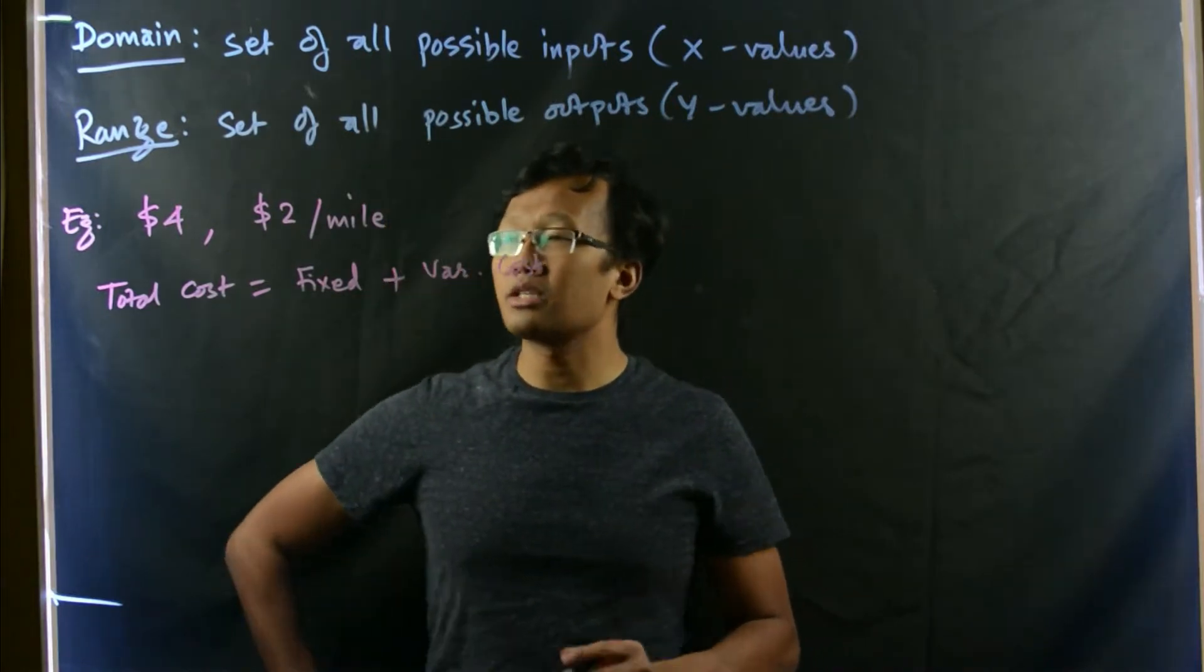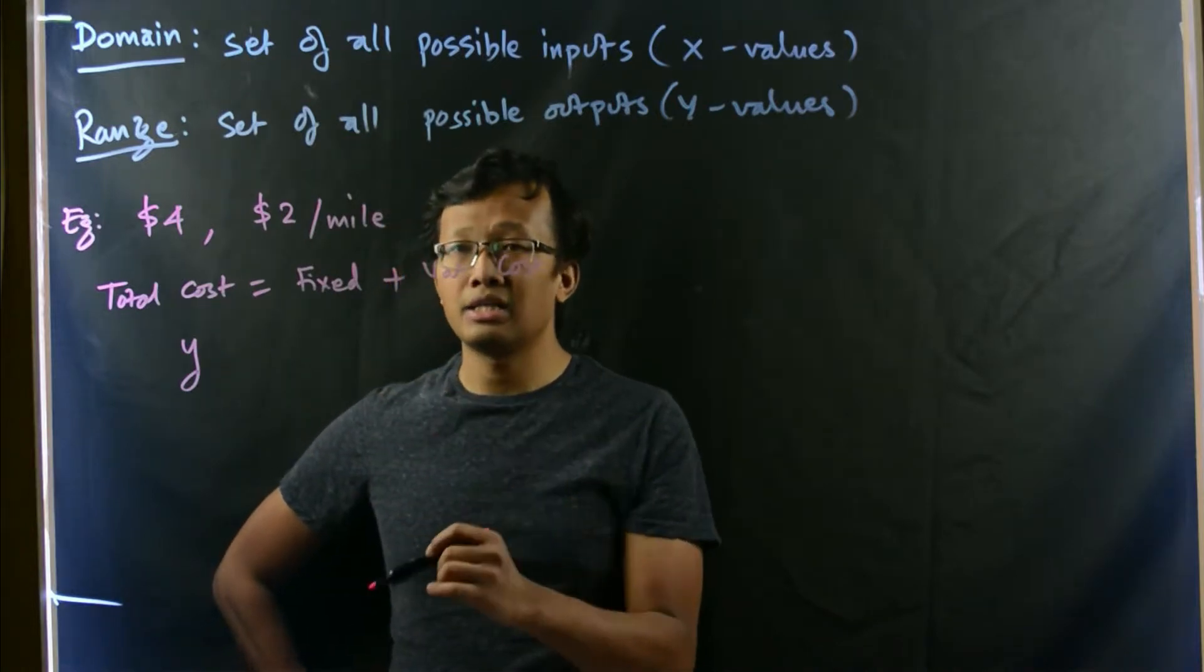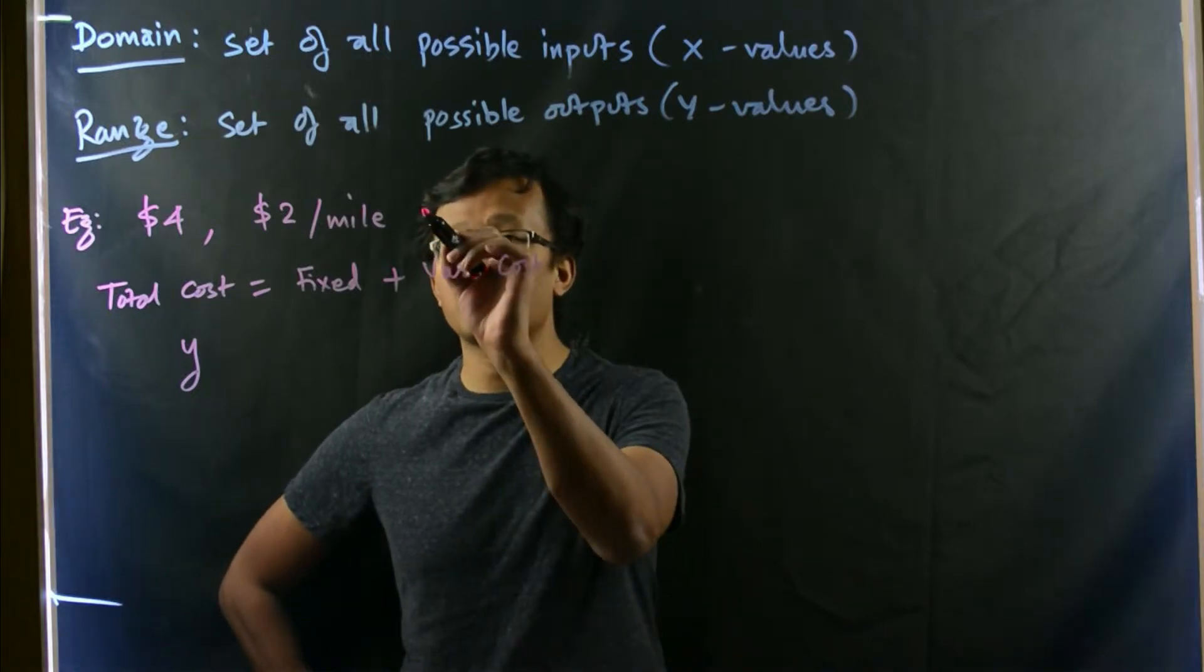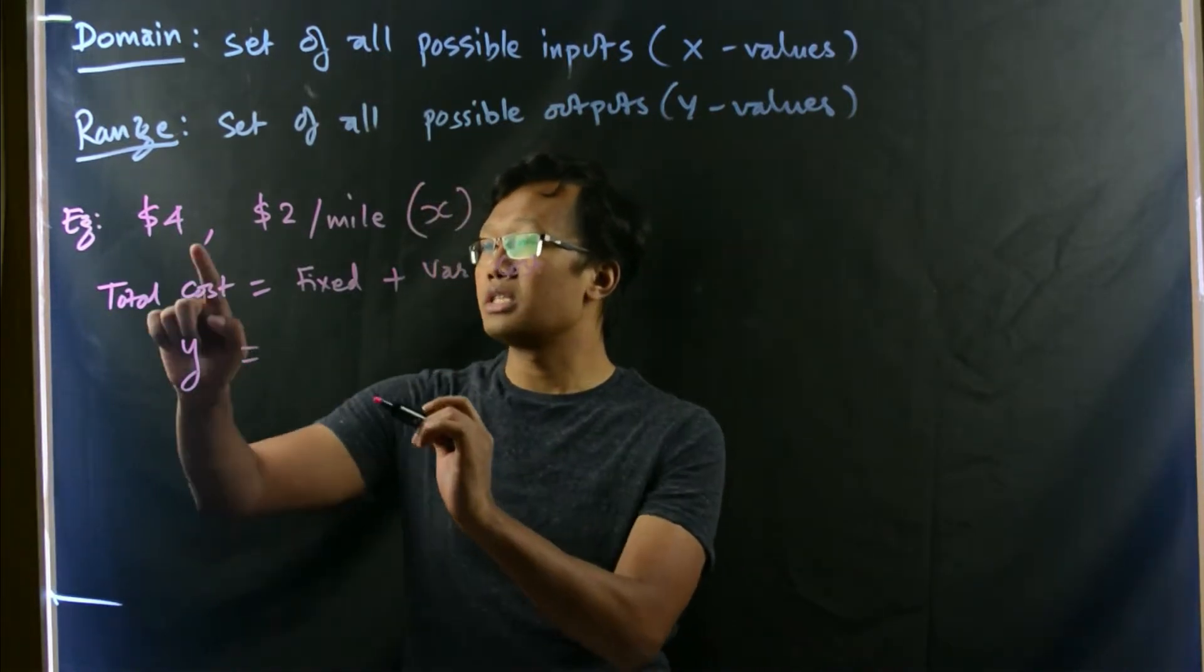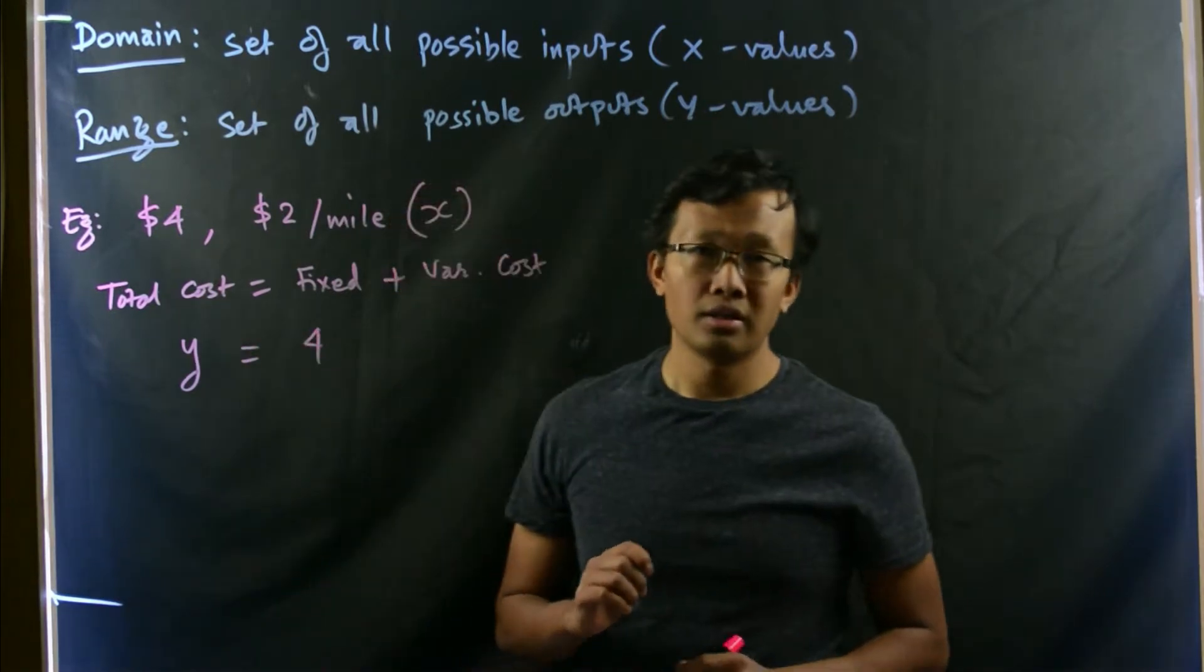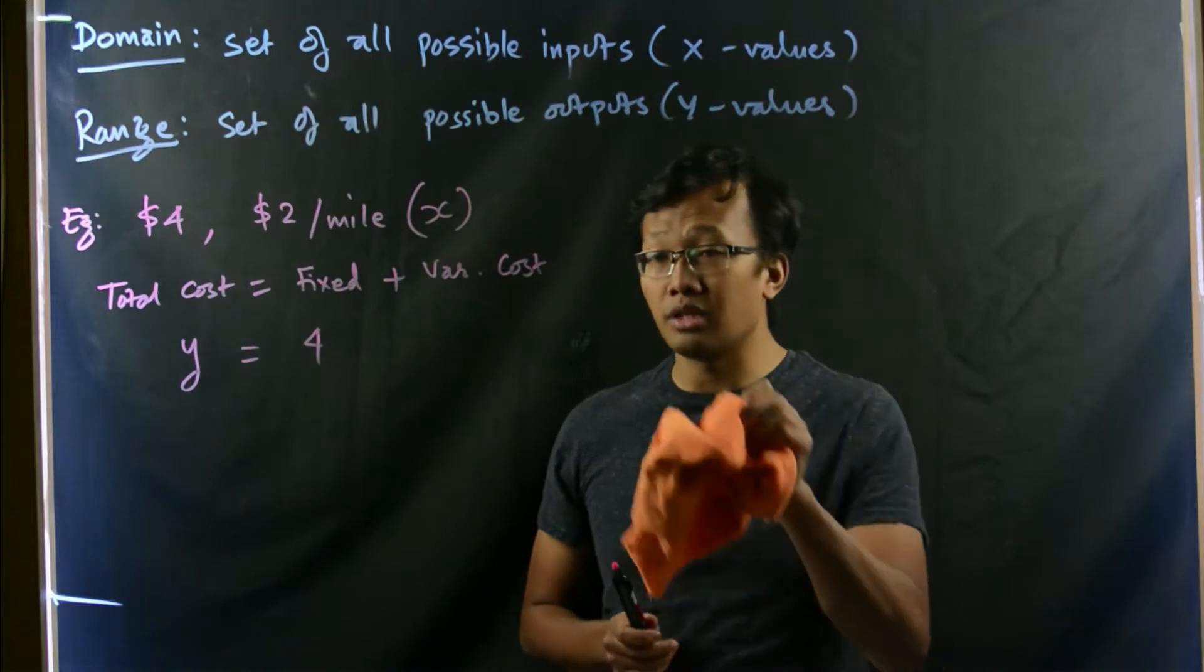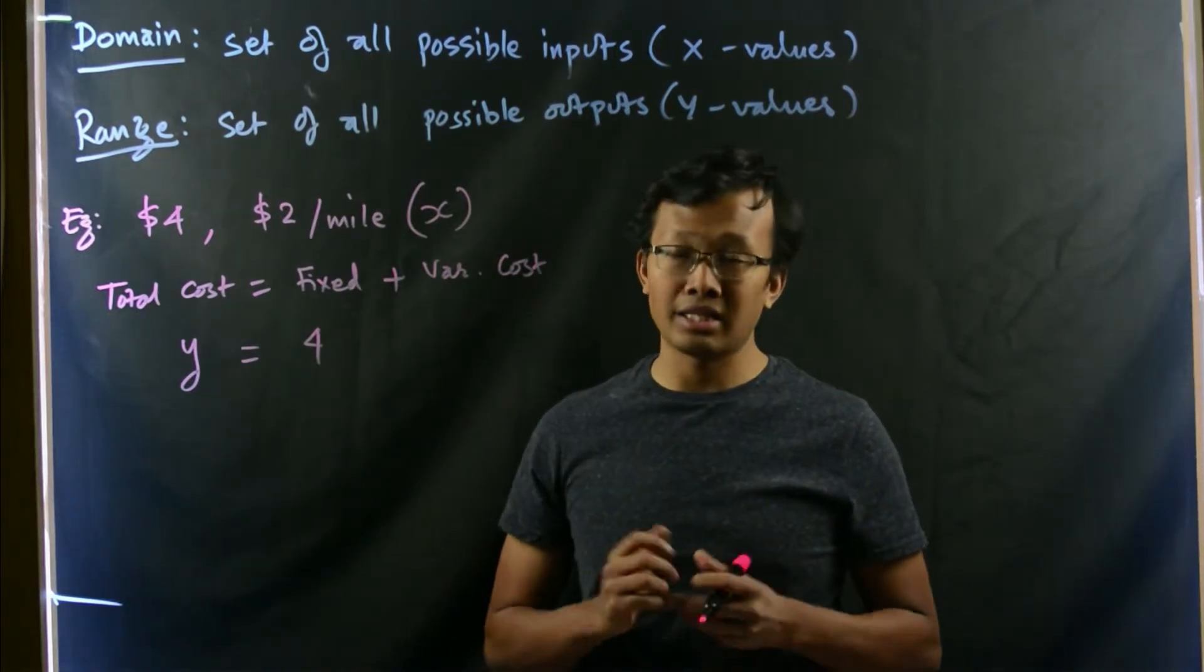Here, total cost, let us suppose the total cost would be y. And let us suppose that the total miles traveled be x. Then, the fixed cost is simply $4, no matter if you hire a taxi, and if you just hop into the taxi, then you will be immediately charged $4. That's our assumption.